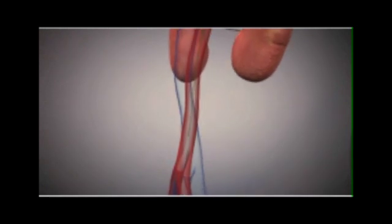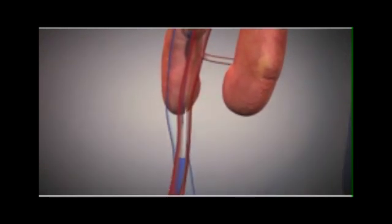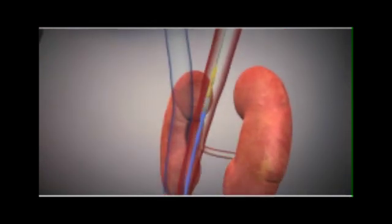After the valve is balloon dilated we remove that balloon and then we pass a larger tube up to facilitate the implantation of the valve itself.